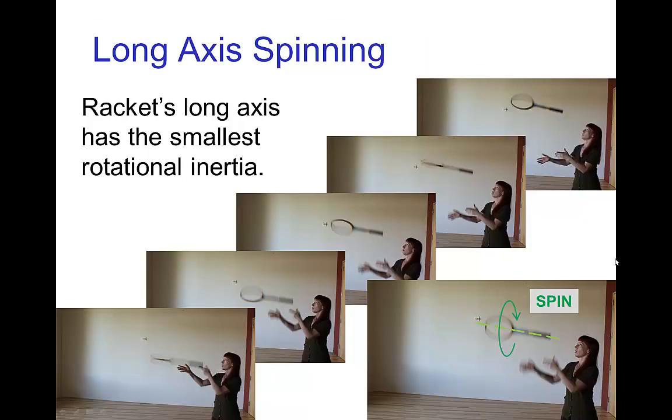So here's some frames from a video of a tennis racket which is thrown into the air. And in this case, it's spinning around the long axis. This long axis, the racket has the lowest rotational inertia for spinning. So in this case, it has a rather regular turning motion of spinning.